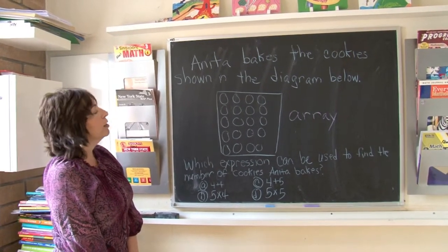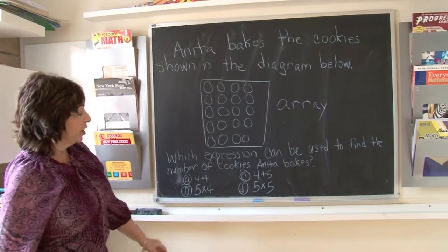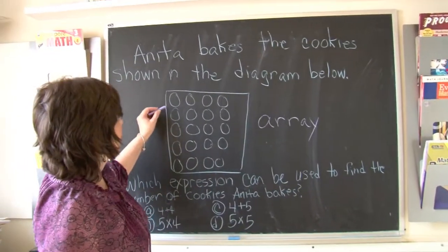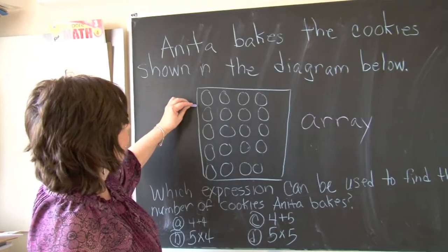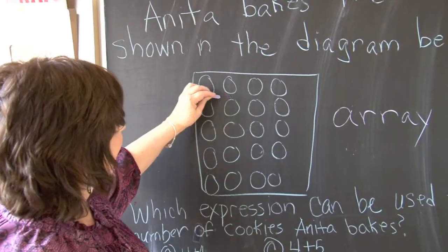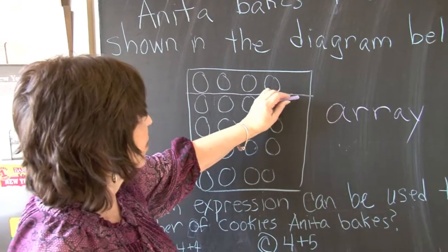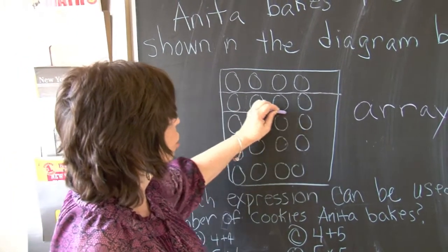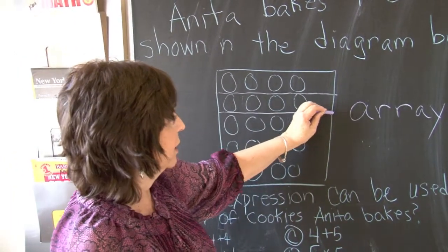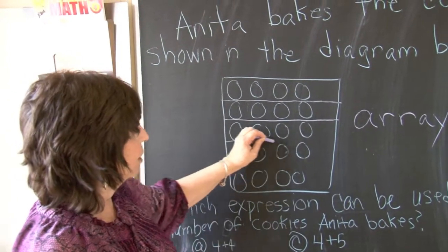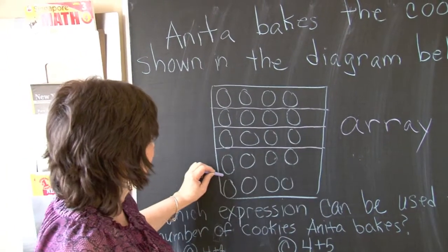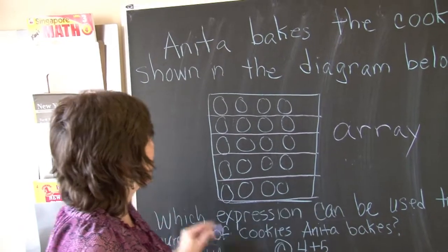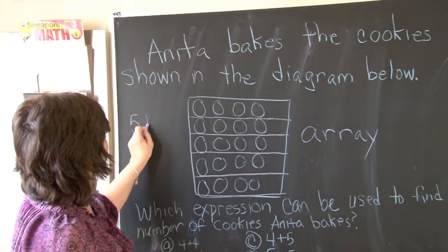When we look at an array, we first start by looking at how many rows we have. Each row goes from left to right. So this would be one row, two rows, three rows, four rows, and our last would be five rows. So we have five rows.